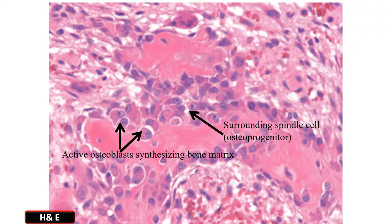This photomicrograph shows bone tissue. The single arrow points toward an osteoprogenitor cell — a small cell with a central blue nucleus and bluish cytoplasm. The double arrow points toward an active osteoblast that is synthesizing bone matrix. These osteoblasts are larger, have an eccentric large nucleus, pinkish cytoplasm, and lie in close proximity to the bone surface.